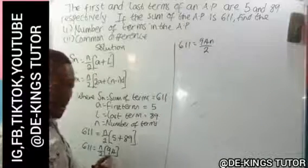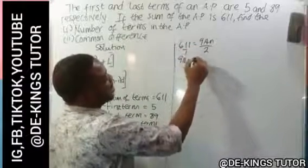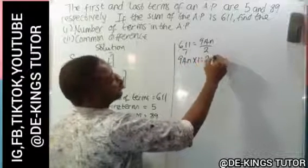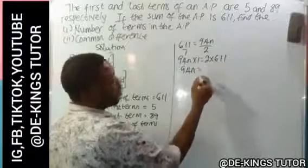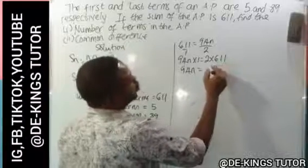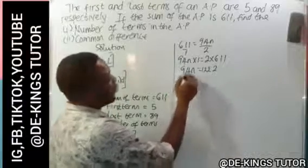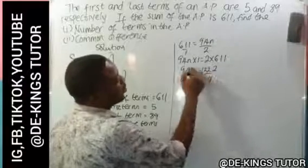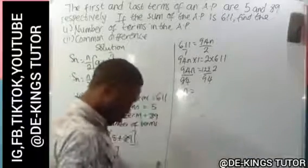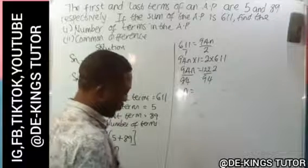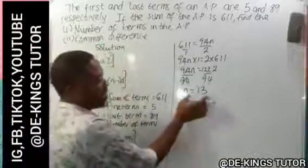If we have a whole number, it multiplies the numerator. So to simplify, we cross-multiply: 94n × 1 = 2 × 611, giving us 94n = 1222. Now dividing both sides by 94 to get n: 1222 divided by 94 gives us 13. So the number of terms in the AP is 13.